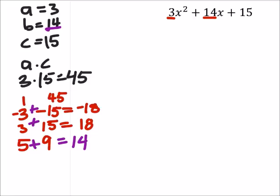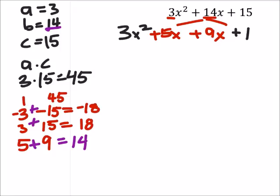So this tells us what we need to break the 14 up into, right? We've got the 3x squared, but 14x we're going to break up into, do you want the 5x first or the 9x? 5. We'll do plus 5x, and then plus 9x, because when we combine those two, we get 14x, and this is plus 15.